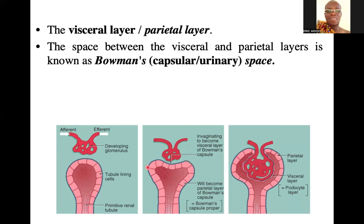Because this tubule invaginates, it ends up having two layers: an inner layer and an outer layer. We call the inner layer the visceral layer of the Bowman's capsule, and the outer layer is the parietal layer of the Bowman's capsule. The visceral layer usually undergoes some differentiation to become a podocyte. The space between the visceral and parietal layers is known as the capsular space or the urinary space.